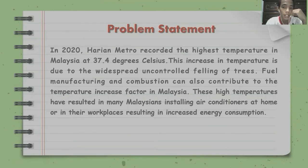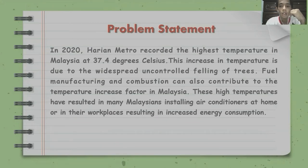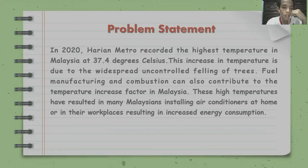In 2020, Malaysia recorded the highest temperature at 37.4 degrees Celsius. This increase in temperature is due to widespread uncontrolled felling of trees. Manufacturing and combustion can also contribute to the temperature increase in Malaysia. This high temperature has resulted in many Malaysians installing air conditioners at home or in their workplace, resulting in increased energy consumption.